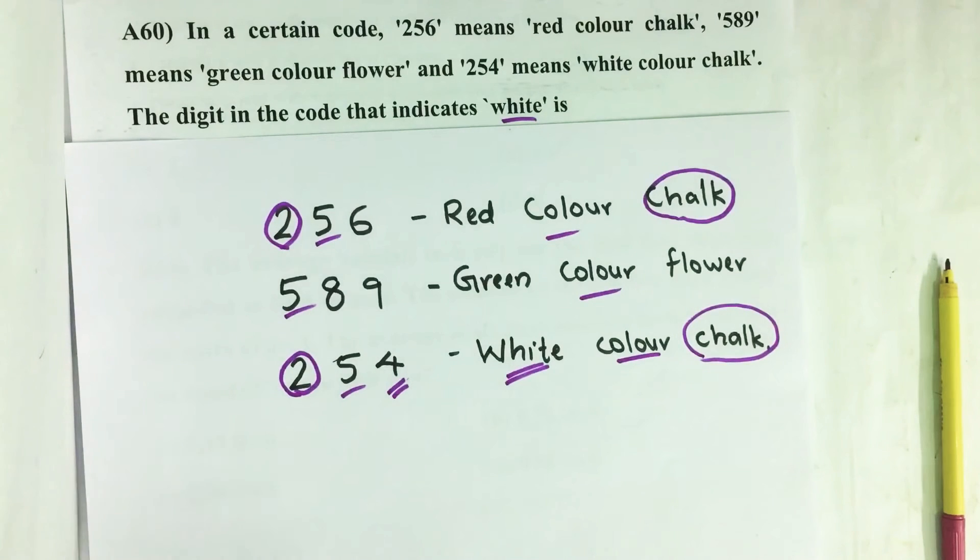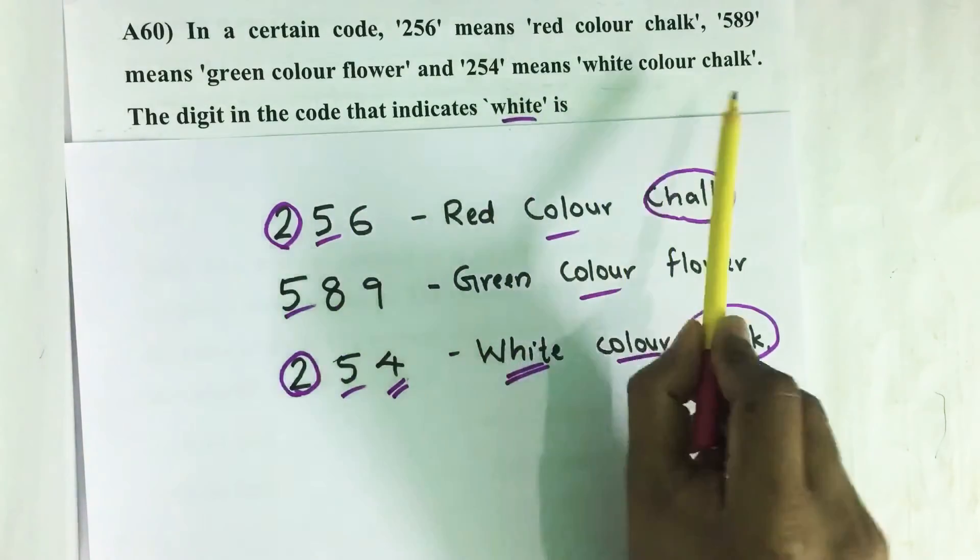Hello everyone, here I am going to solve 2017 CSAT question number 60 from question paper series A. In a certain code, 256 means red color chalk, 589 means green color flower, 254 means white color chalk.